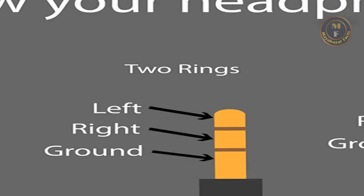The next type is TRS type. There are two rings and three sections in the jack: tip, ring, and sleeve. The sleeve connects to the ground wire. The ring carries one audio signal and the tip carries the other audio signal. This is the stereo headphones pin. Here there is one sound on the left and one on the right.